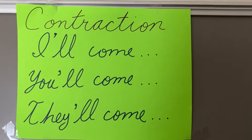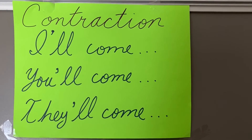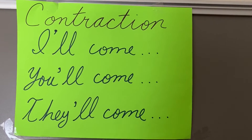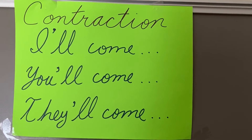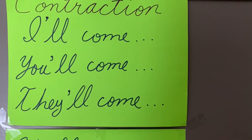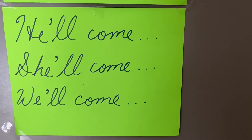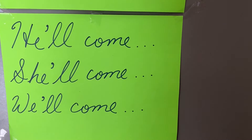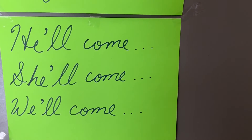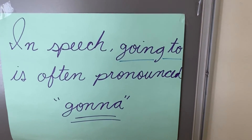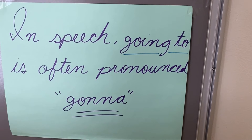The contraction form of future tense is like this — repeat with me: I'll come, you'll come, they'll come, he'll come, she'll come, we'll come. In speech, let me tell you something: 'going to' is often pronounced 'gonna.'